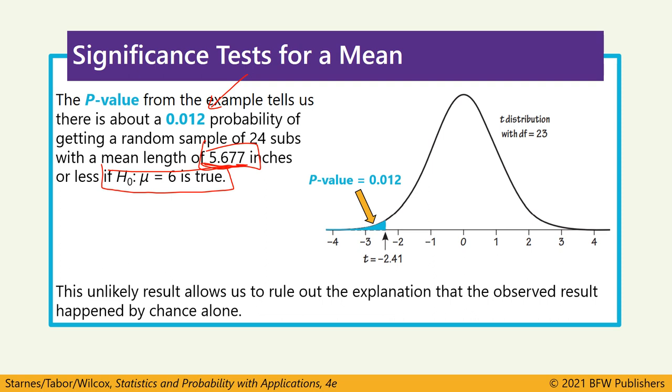Now, this is unlikely because it's less than 5%. Or for the problem we were just working with, it's less than 10% because that was our alpha level. And that allows us to rule out that initial null hypothesis and say that this is unlikely enough to occur that we think that they're actually being misleading when they say the average sub-length is 6 inches.